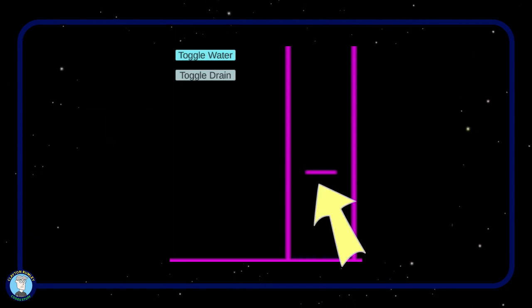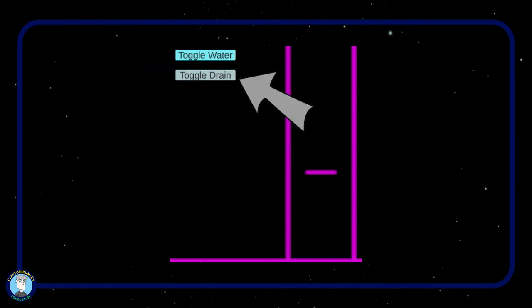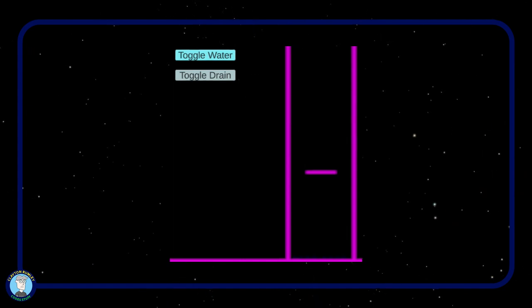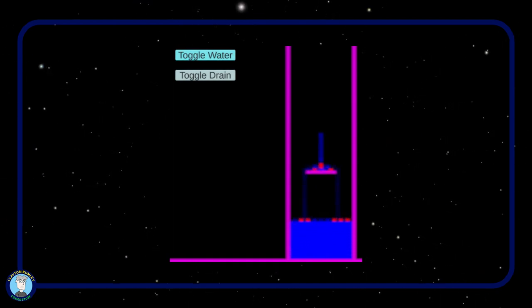I created a small platform in the middle of my container, just to see how water would flow around it. I added a button to turn on and off the water, and added a button to change a small portion of the bottom boundary to drain and back to boundary. Then I turned it off and on to see what would happen. The results were better than I expected, and super performant.